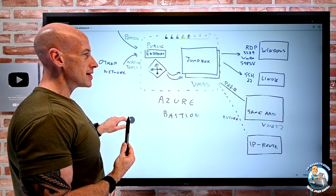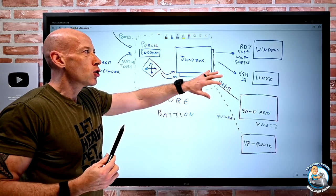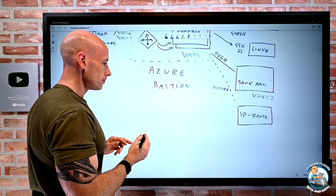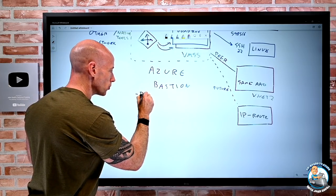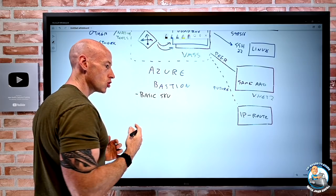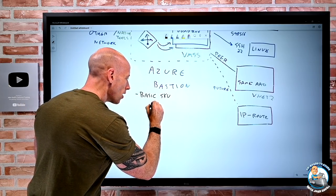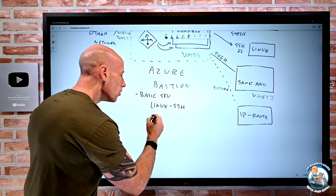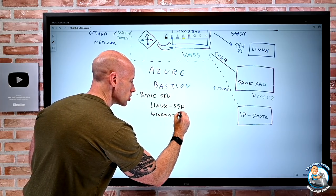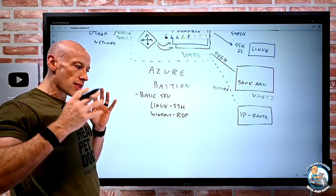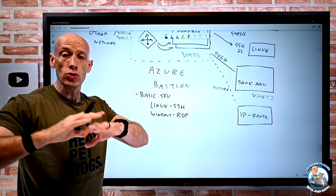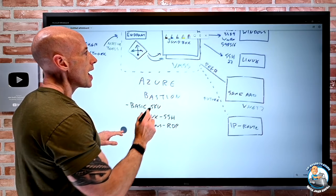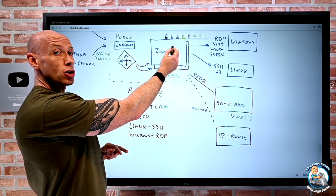There are two different SKUs of Azure Bastion. With the Basic SKU, for Linux VMs you connect using standard port 22 SSH, and for Windows you connect using RDP on port 3389. You can't use a different port, and you can't use SSH to connect to Windows or RDP to connect to Linux. There are exactly two instances with the Basic SKU.